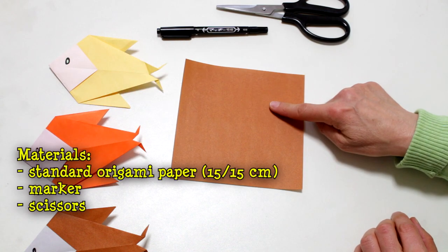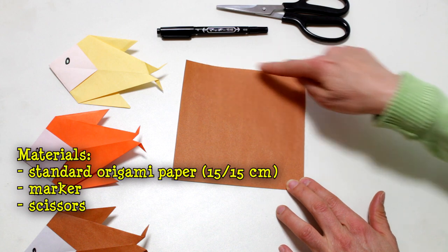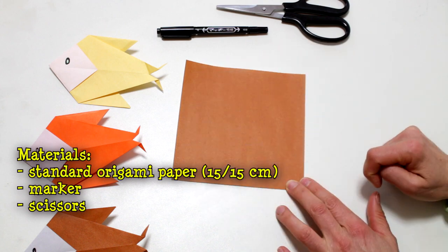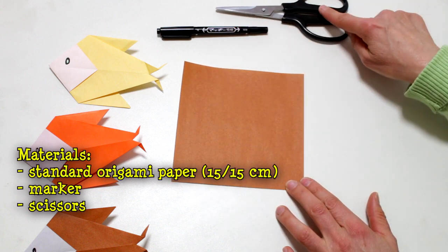For this model we need a regular origami paper, 15 centimeters by 15 centimeters, a marker and a pair of scissors.